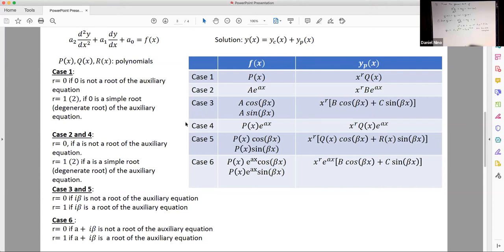To figure out the value of r, we need to look at this case. It says r is equal to zero if i beta is not a root of the auxiliary equation, or is equal to 1 if i beta is a root of the auxiliary equation.